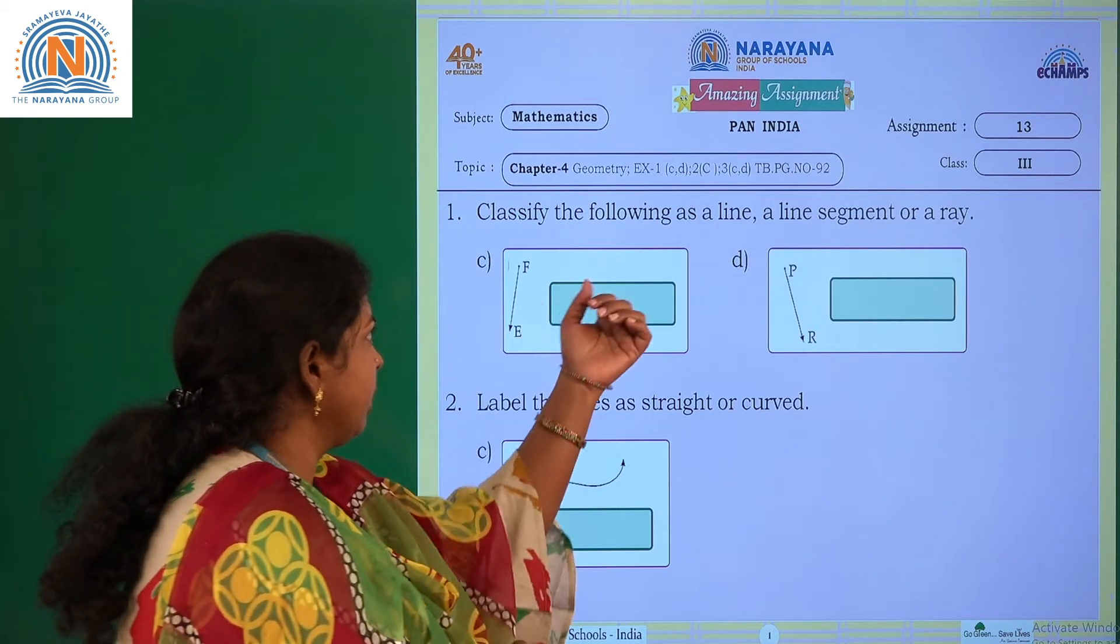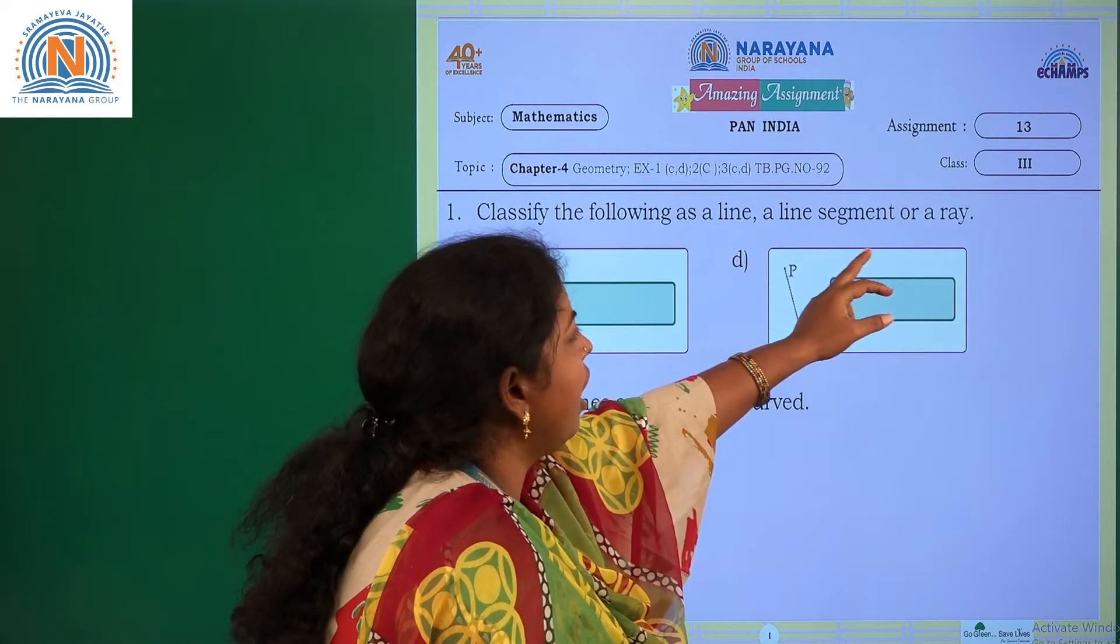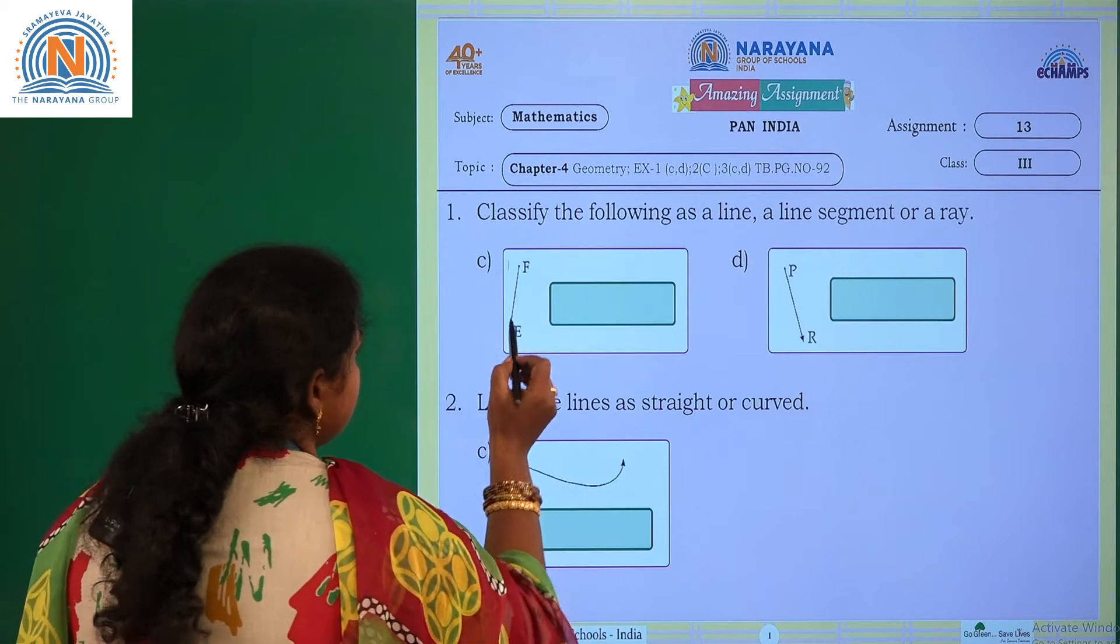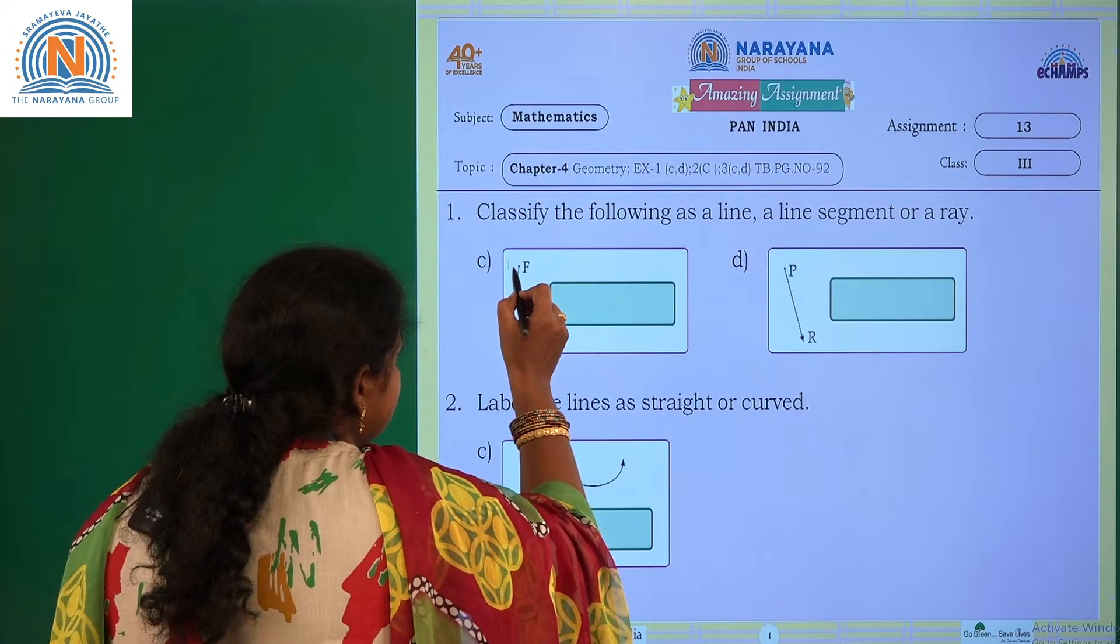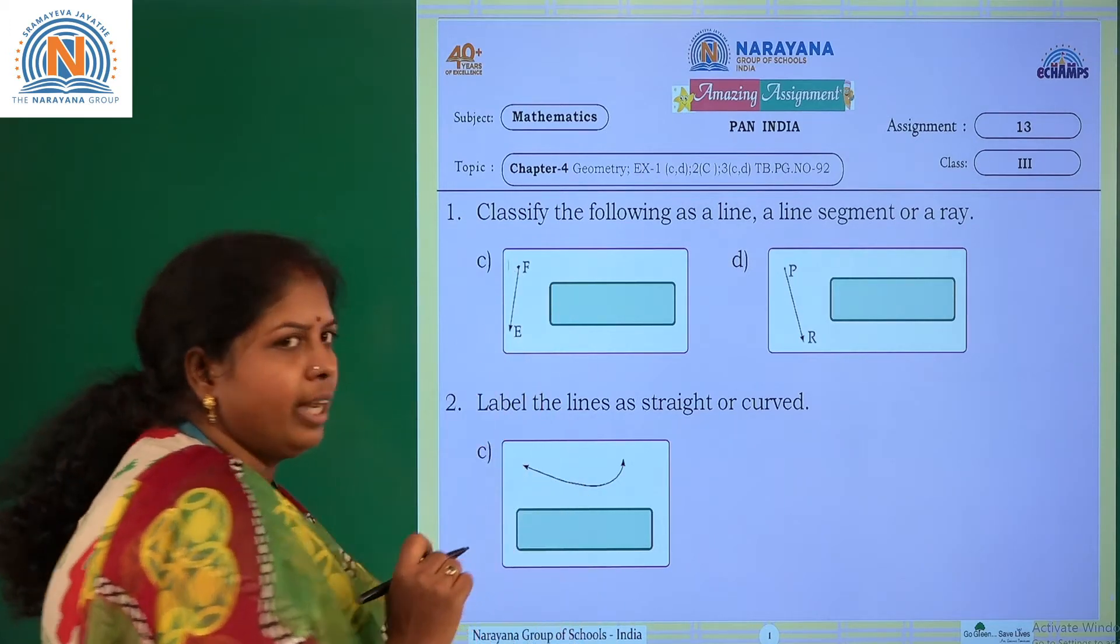Let's start our first question. Classify the following as a line, line segment or ray. Let us observe the given image. See, it is F and E. There is one initial point and there is no ending point.